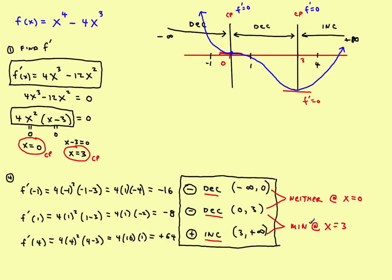So looking at the graph, the first derivative test confirms: when it goes from decreasing to increasing, you have a minimum at x equals 3. And where it went from decreasing to decreasing at x equals 0, you have neither a maximum nor a minimum. That's a second example of finding increasing and decreasing intervals — showing that a critical point doesn't necessarily mean the function changes from increasing to decreasing or the other way.